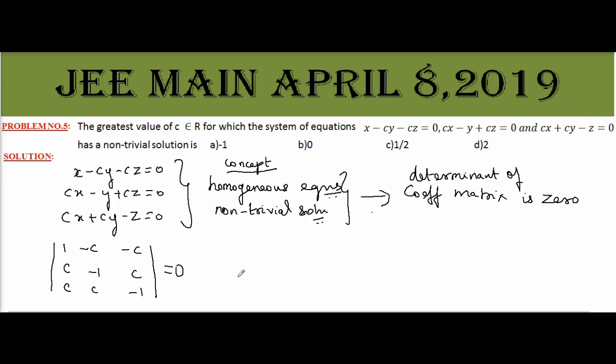Now if we expand and solve the equation, it will give c values. That's the greatest value, that's the answer.